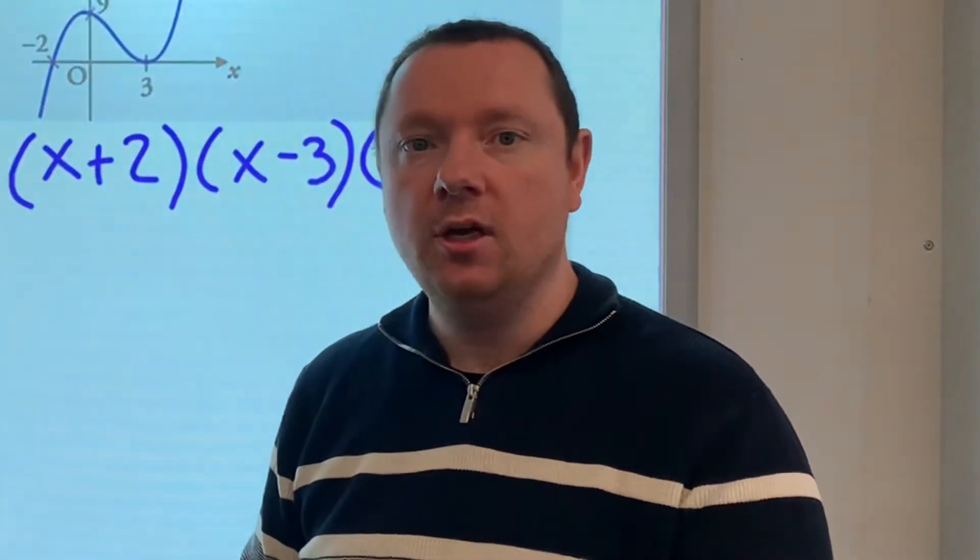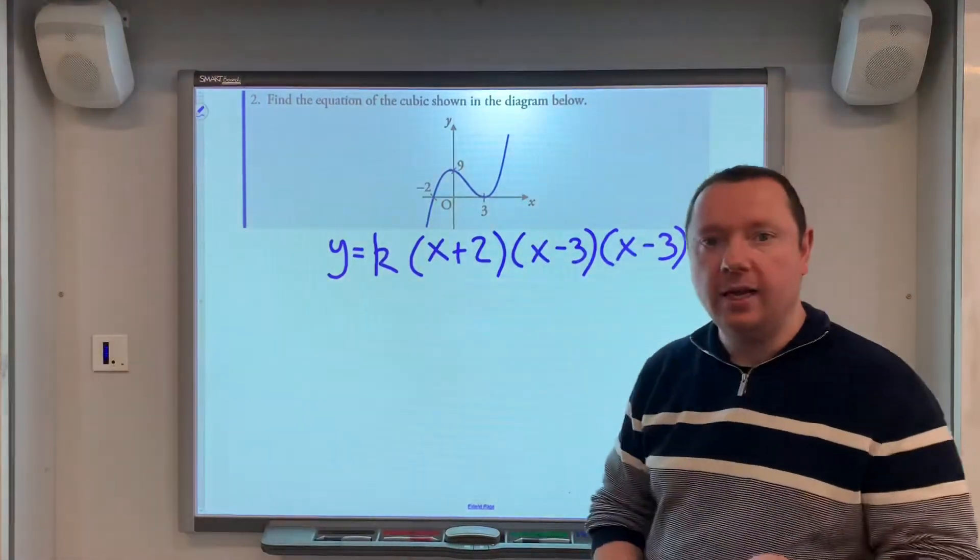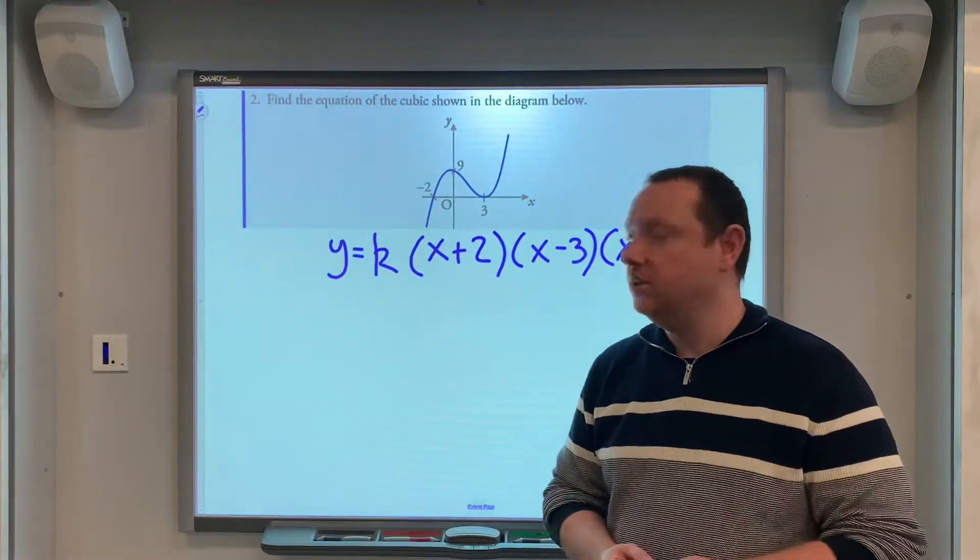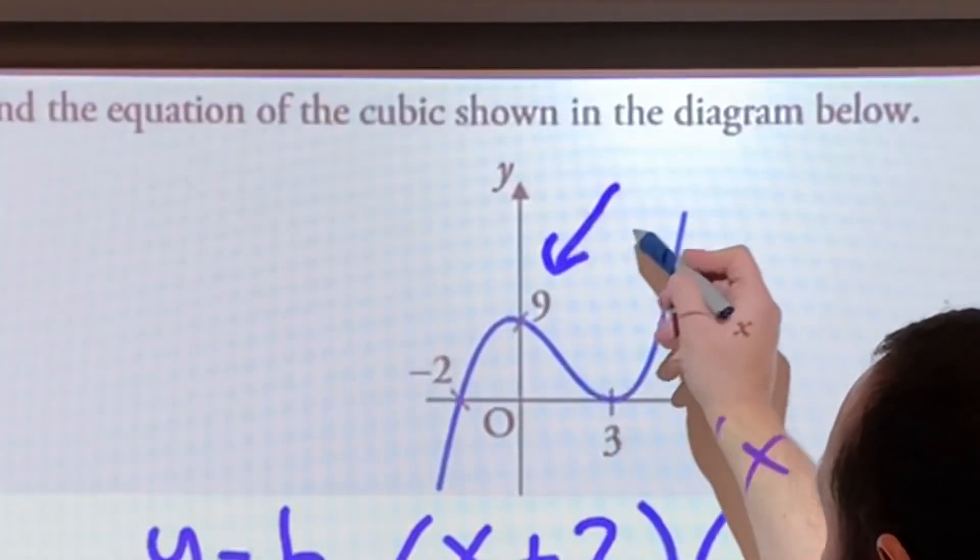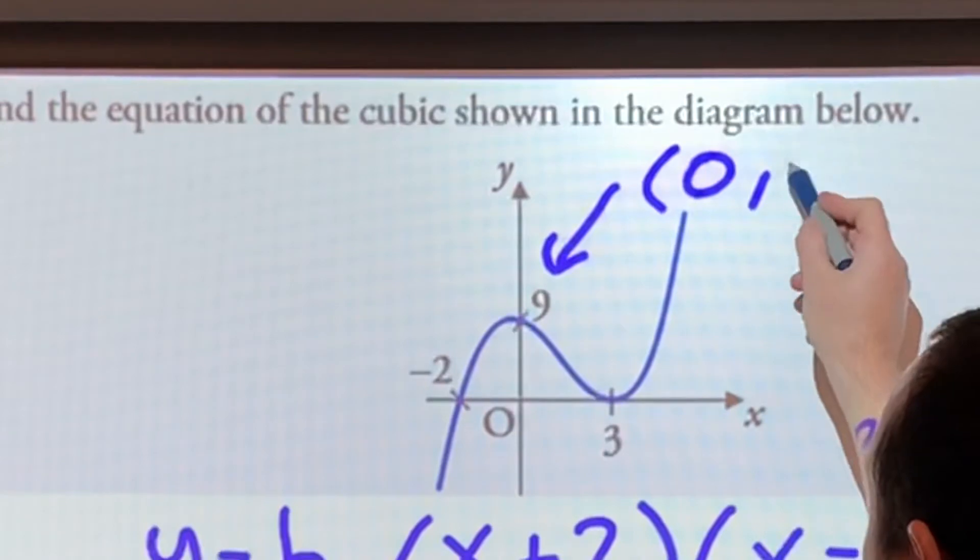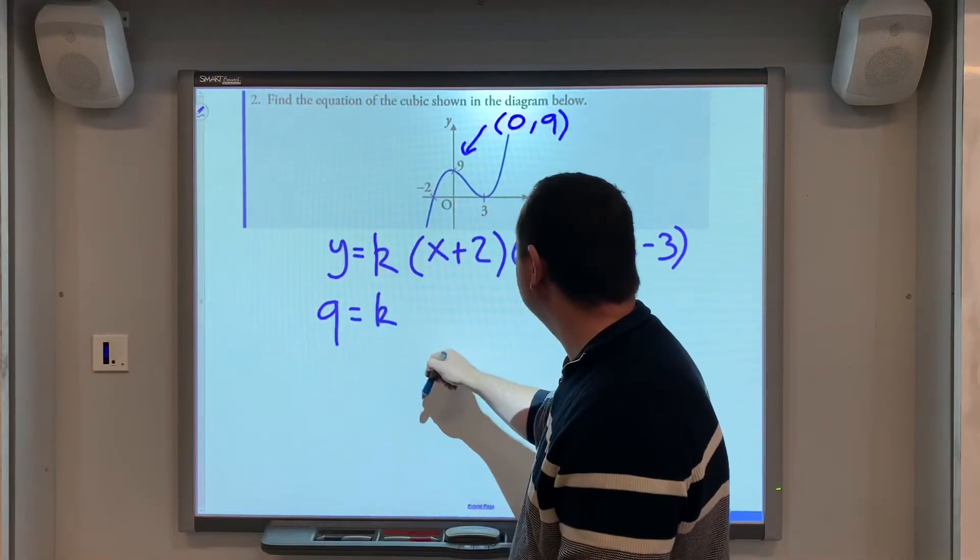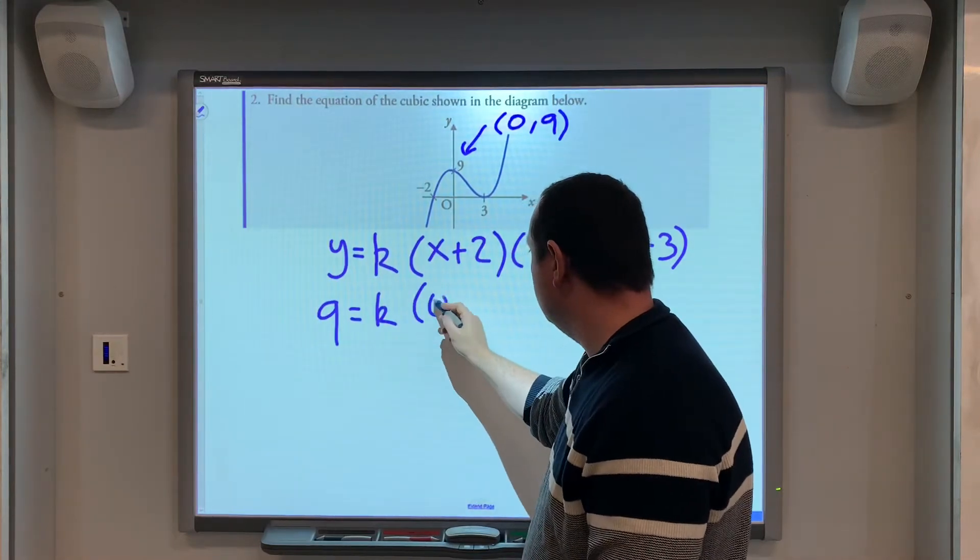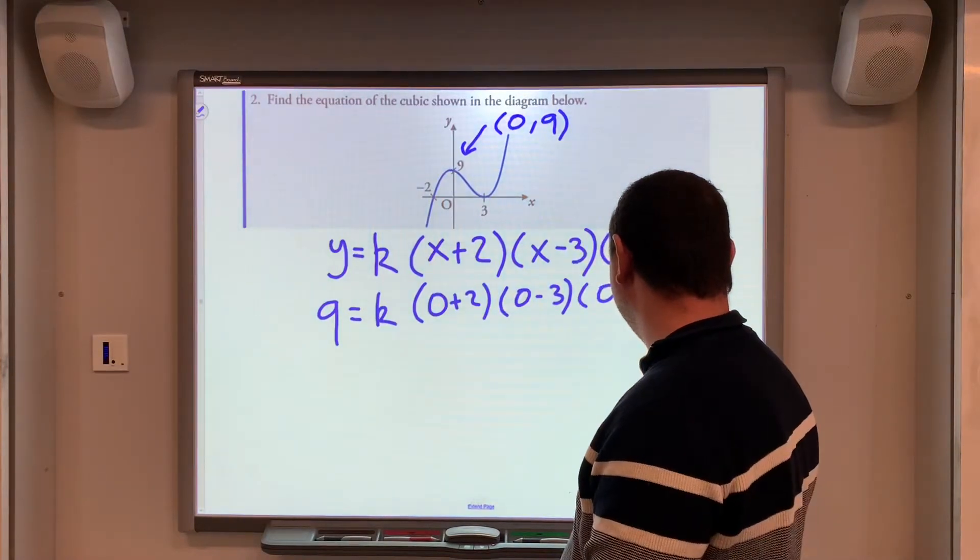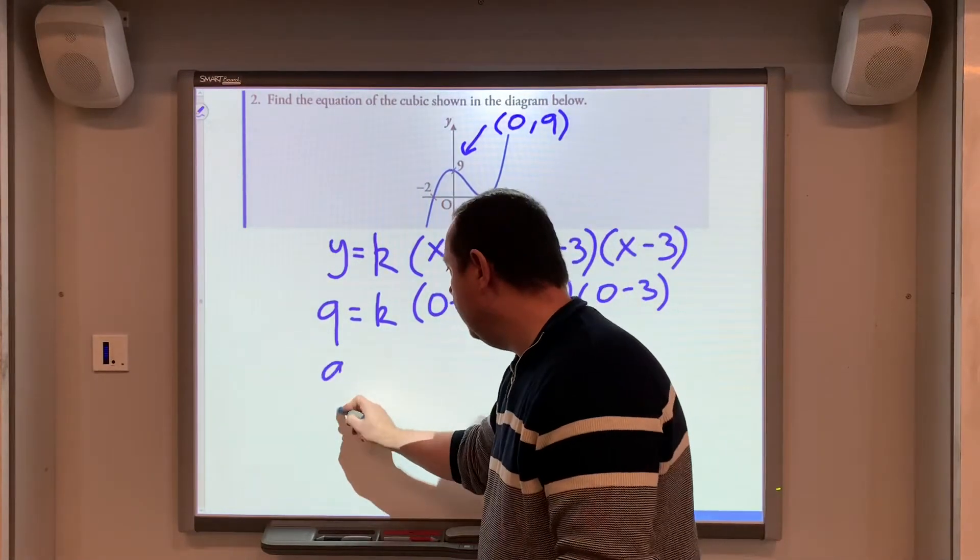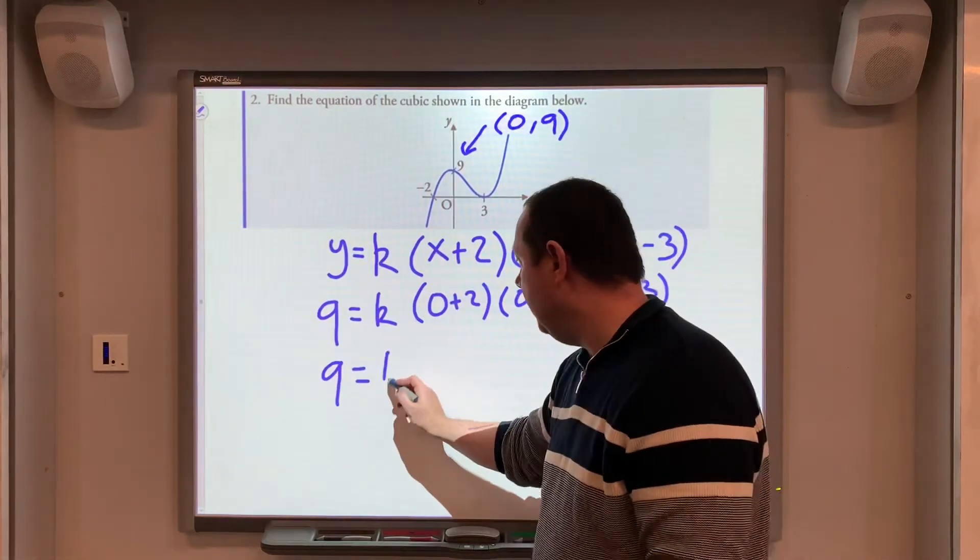If the turning point is a root, it's a repeated root. And for a cubic, you should always have 3 distinct factors, but 2 of them could be the same. So, now we can substitute, because we're given this point here. That point is 0, 9, 9 equals k times 0 plus 2, 0 minus 3, 0 minus 3, so 9 equals 2 times 3 is 6, 6 times 3 is 18,